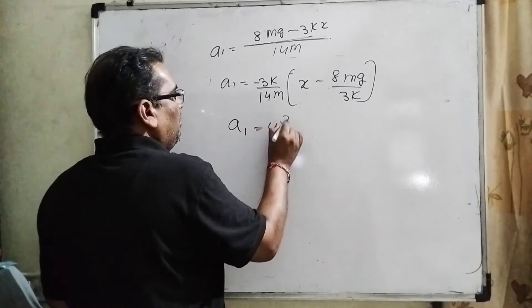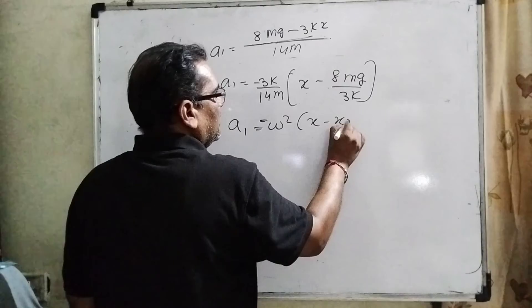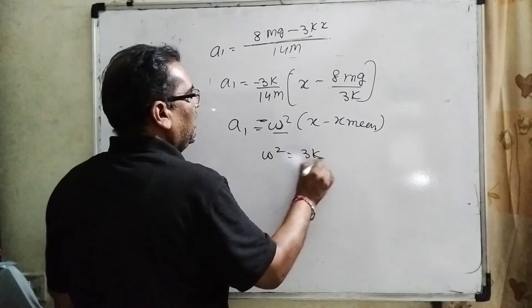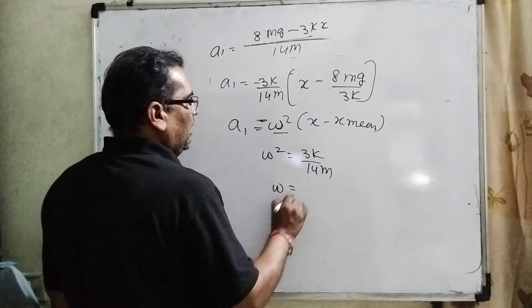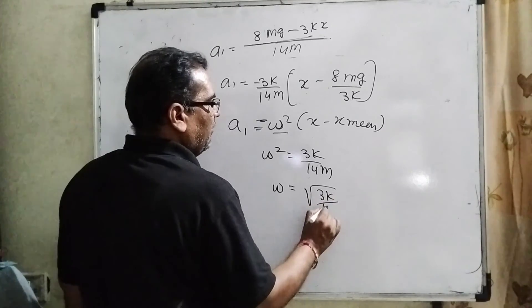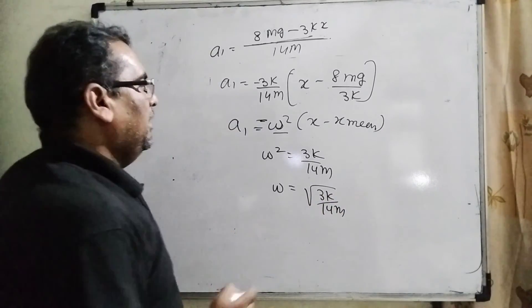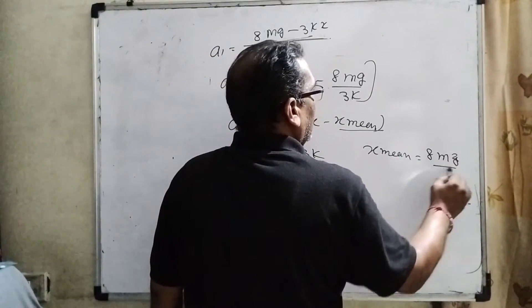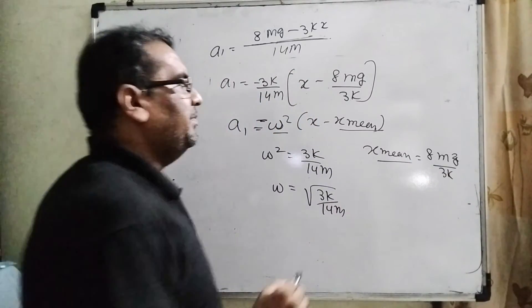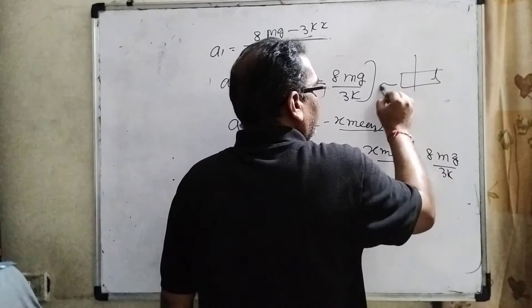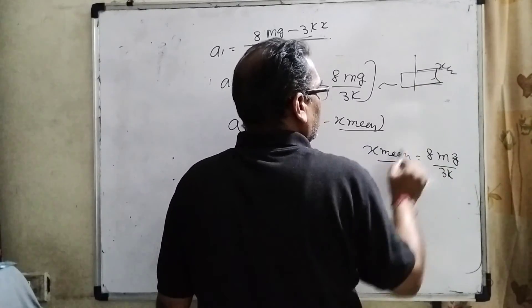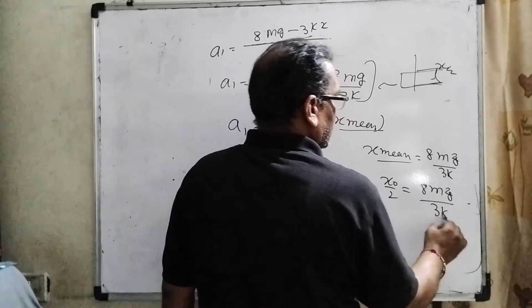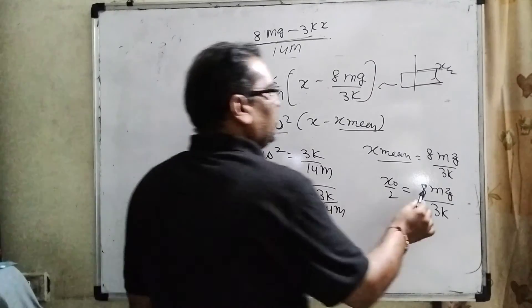Now 14m gets LCM, 8mg - 3kx becomes a1. Here -3k and 14m get common, then becomes a1 = (-3k/14m)(x - 8mg/3k). So by comparing a1 = -ω²(x - x_mean), you can see that here the angular velocity ω² = 3k/14m. Then ω = √(3k/14m). Now here in the position of x_mean, x_mean = 8mg/3k. What is x_mean? Here x_mean is given in the position x0/2. Therefore x0/2 = 8mg/3k. Then x0 = 16mg/3k.